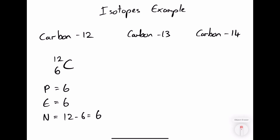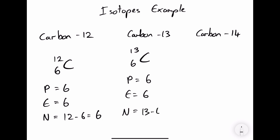Carbon-13 has the same atomic number of 6 and a mass number of 13. So this means it has 6 protons, 6 electrons, and 13 minus 6 gives 7 neutrons.